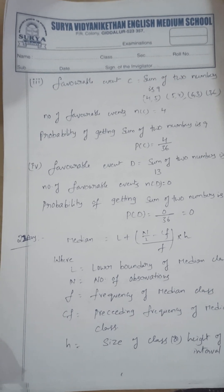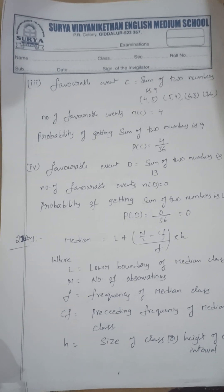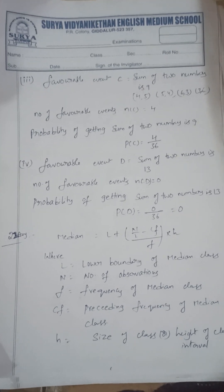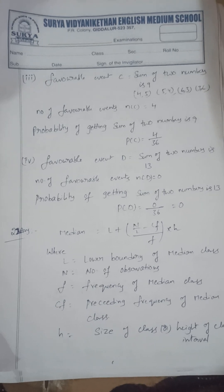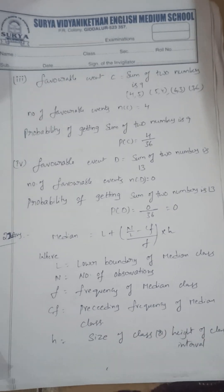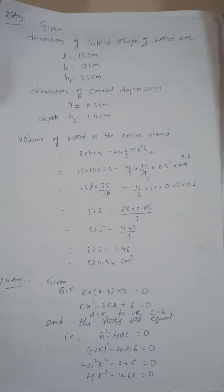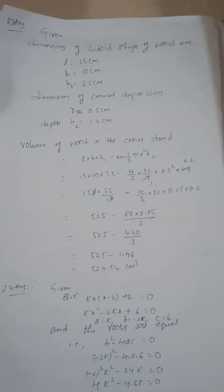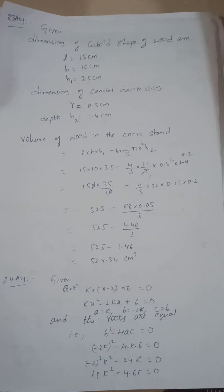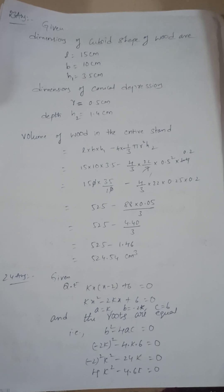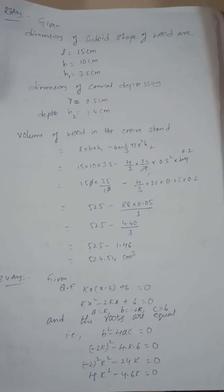Next, write the median formula and explain the terms. It is l plus n by 2 minus cf by f into h. Next, the wood is in the shape of cuboid. In this, four conical depressions are there. Volume of wood in the entire stand is 524.54.